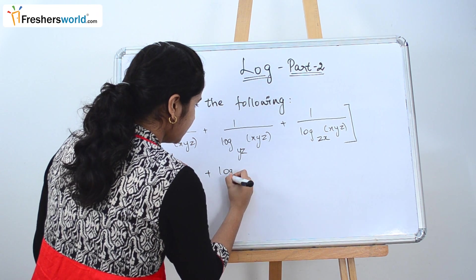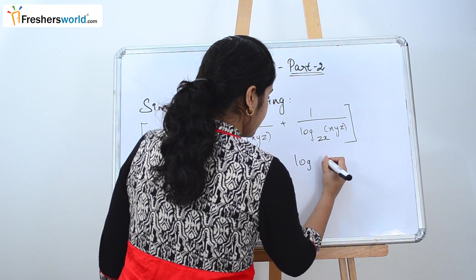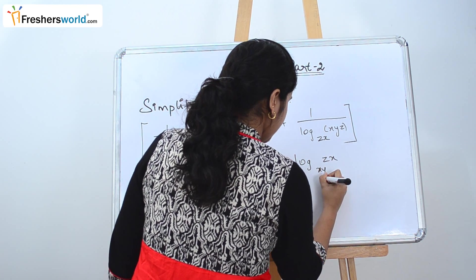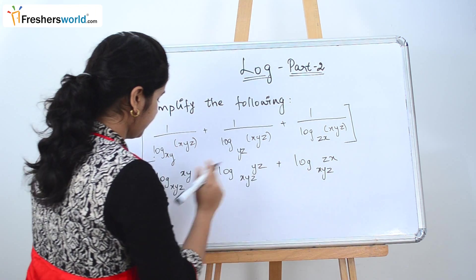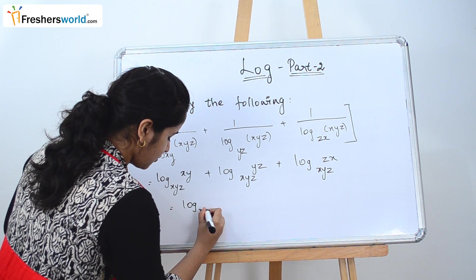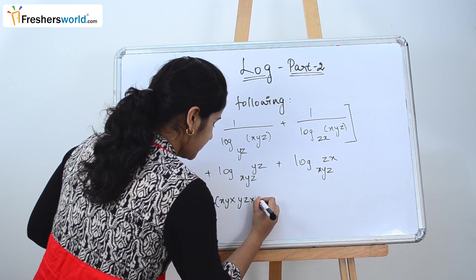So let's do the same for others. log_xyz(yz) + log_xyz(zx). So as you can see the bases are common here. So what do we do? log_xyz(xy × yz × zx).